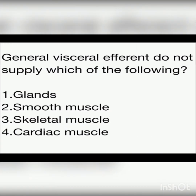The next question: general visceral efferent does not supply which of the following? Options are: glands, smooth muscle, skeletal muscle, cardiac muscle. You can rule out very easily using the concept of voluntary versus involuntary control. Only one voluntary structure is present here — that is skeletal muscle — the rest are involuntary. So even without knowing that general visceral efferent supplies the involuntary part, you can rule out the odd one out, which is the voluntary part: skeletal muscle.